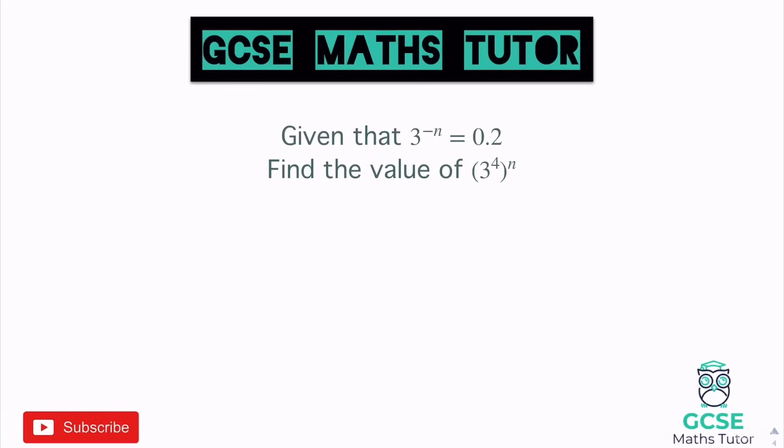On to question four. Given that 3 to the power of minus n equals 0.2, find the value of 3 to the power of 4 to the power of n. We need to figure out what n is. Now, 3 to the power of minus n can be written differently — a negative power is the same as the reciprocal, so it becomes 1 over 3 to the power of n.